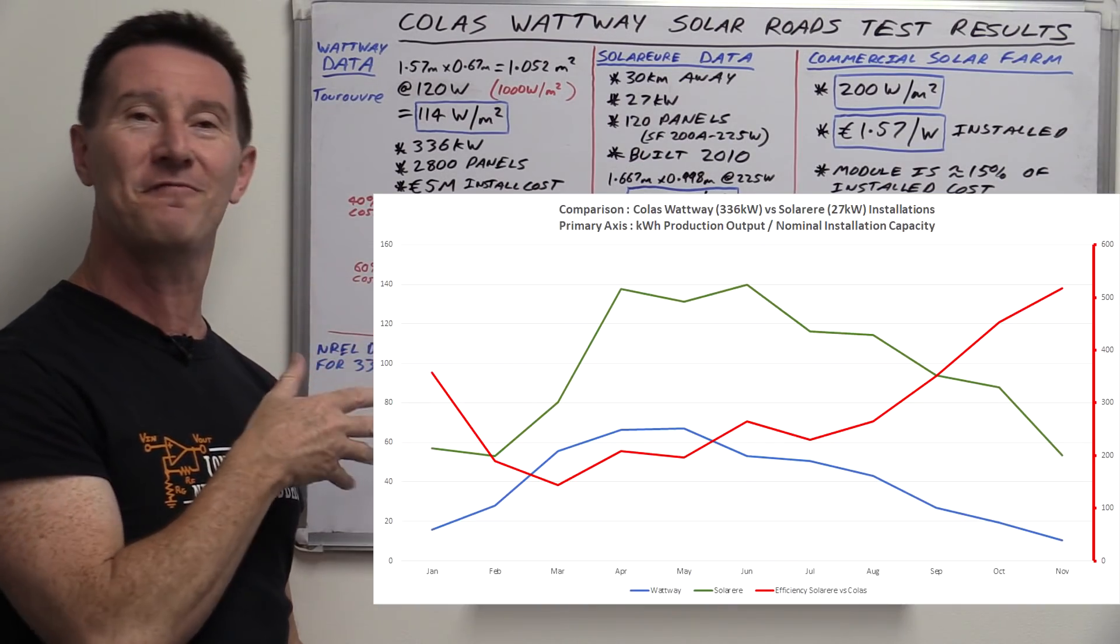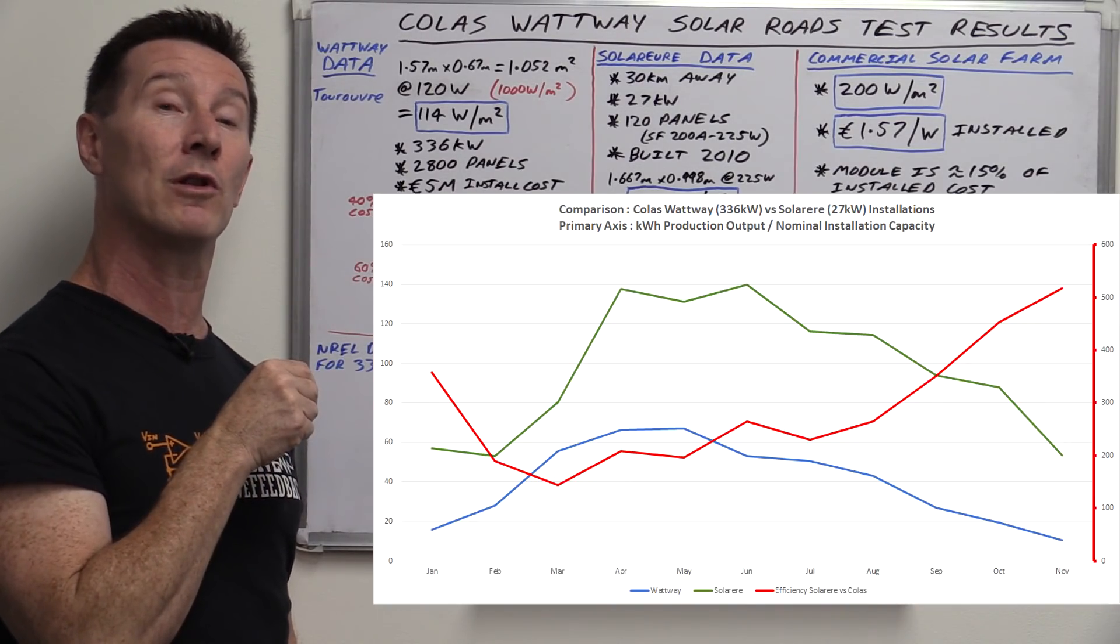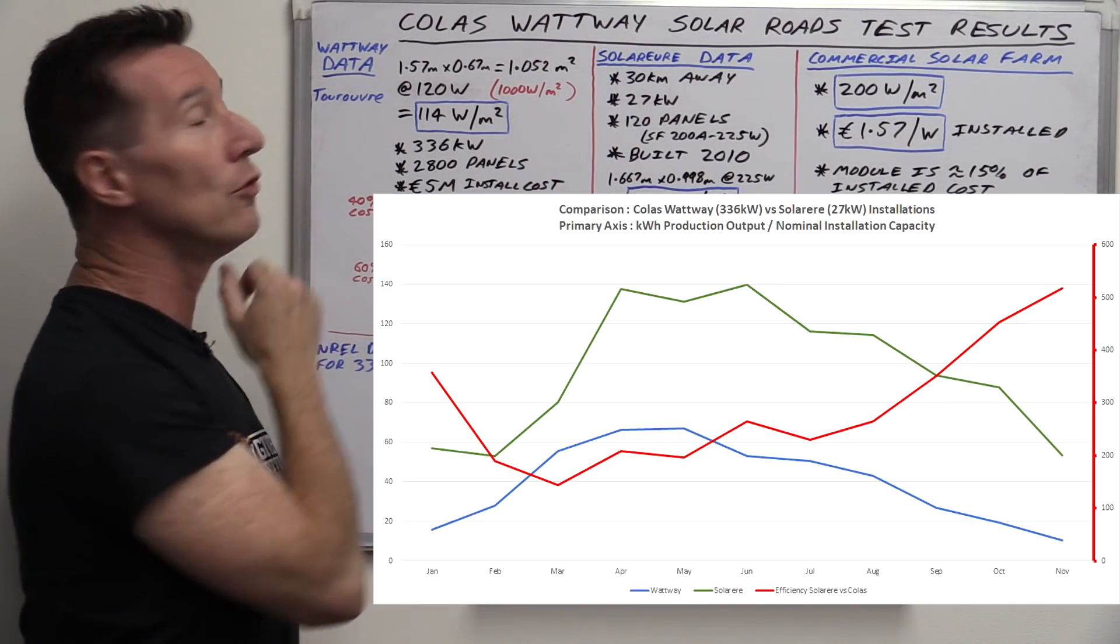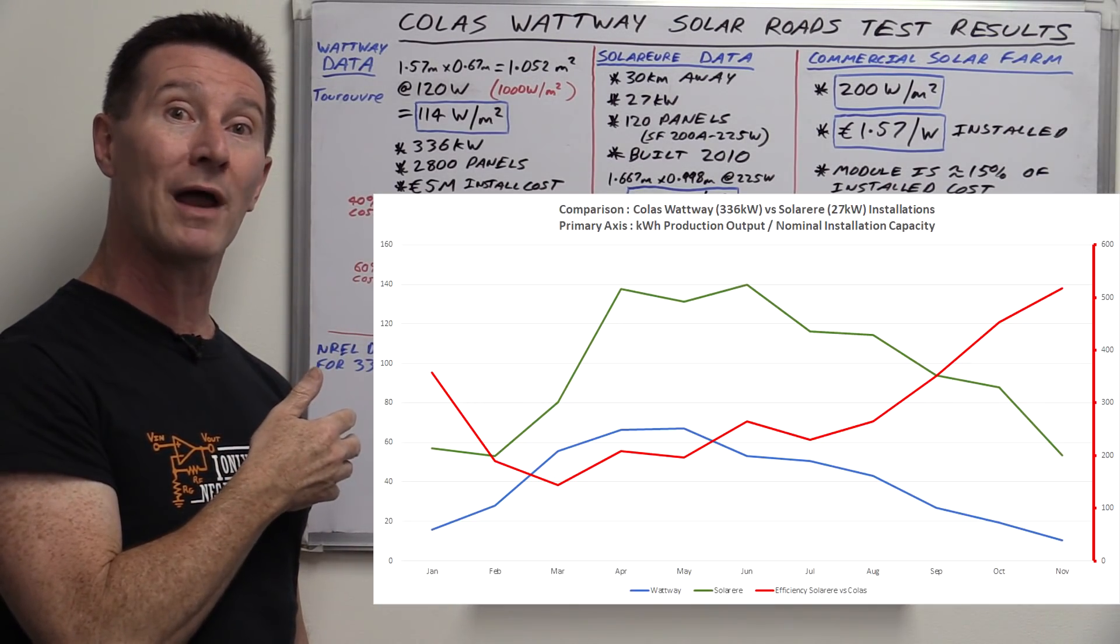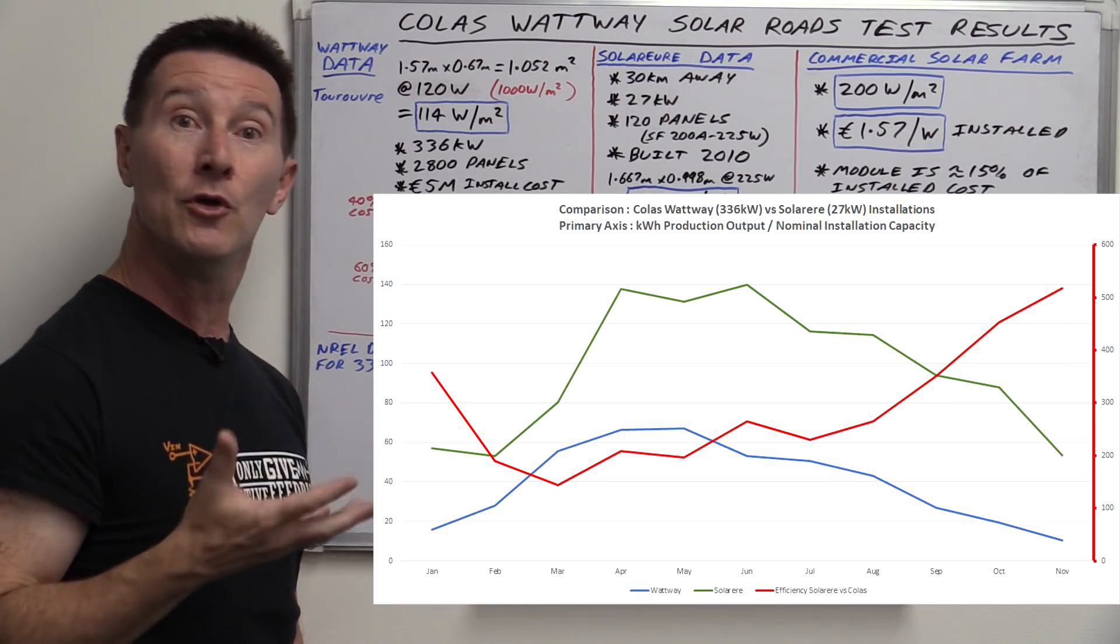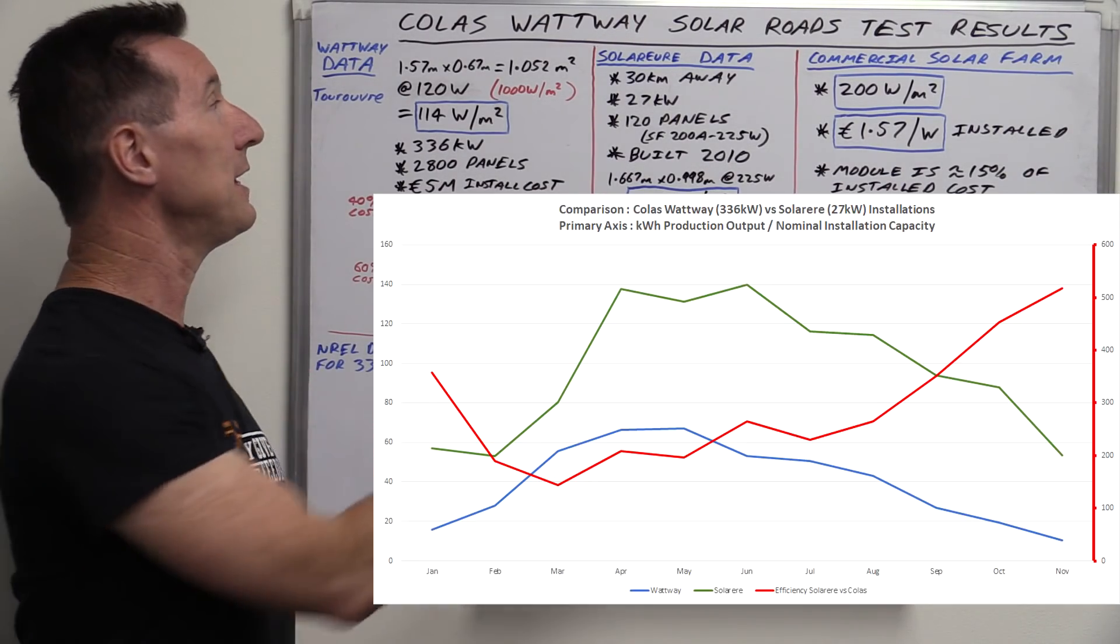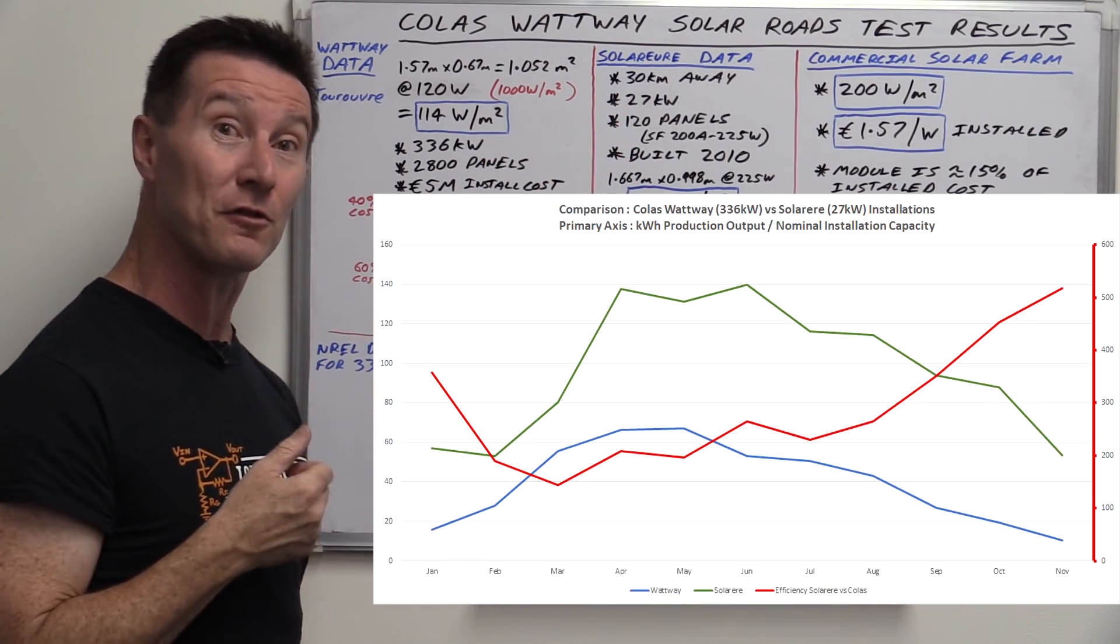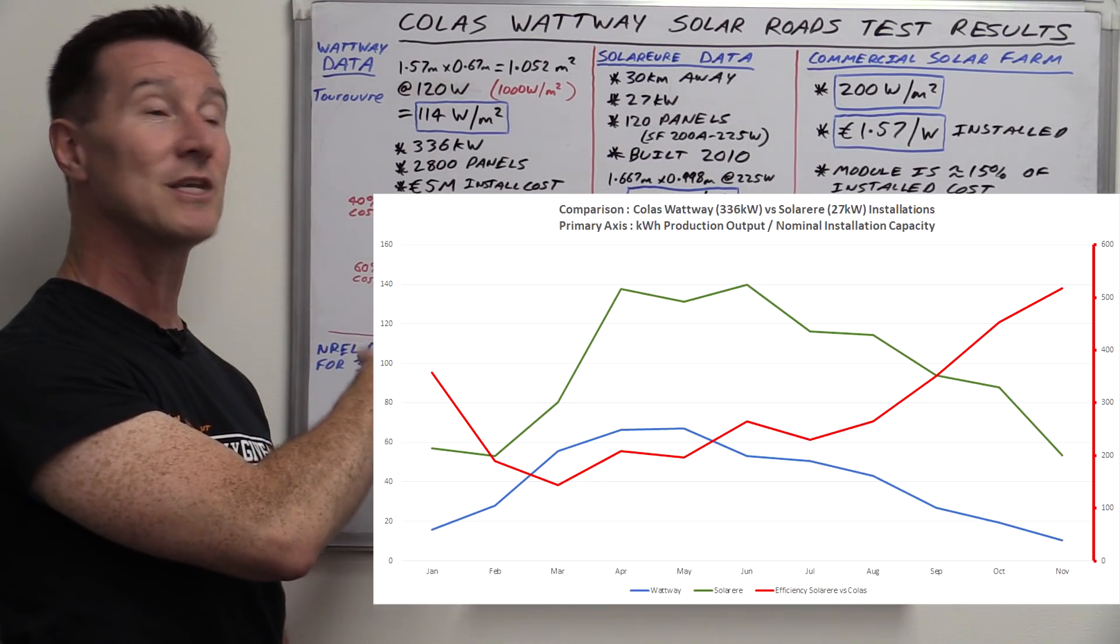And here's the graph for it, comparing the two. Now, it might look a bit funny. Let me try and explain it, but you don't have to understand. The red curve is the one we really want to look at in the end. But the blue and the green one here, the green one on top, is the Solure one, the home base one, and the blue one below it, is the Colas Wattway one. And you can see that it's basically a much lower output per unit size. So it can go anywhere from like just like half of the output of the home installation one, to like a quarter or a fifth or something like that.